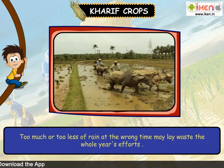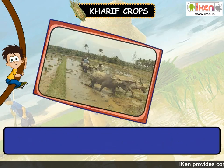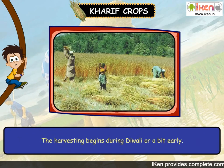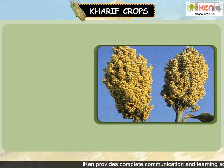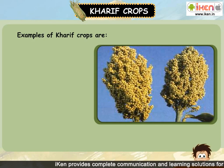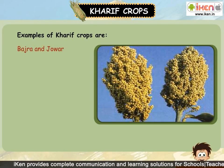These crops are totally dependent on the quantity of rain as well as its timing. Too much or too little rain at the wrong time may lay waste the whole year's efforts. The harvesting begins during Diwali or a bit early. Examples of Kharif crops are Jowar and Bajra.